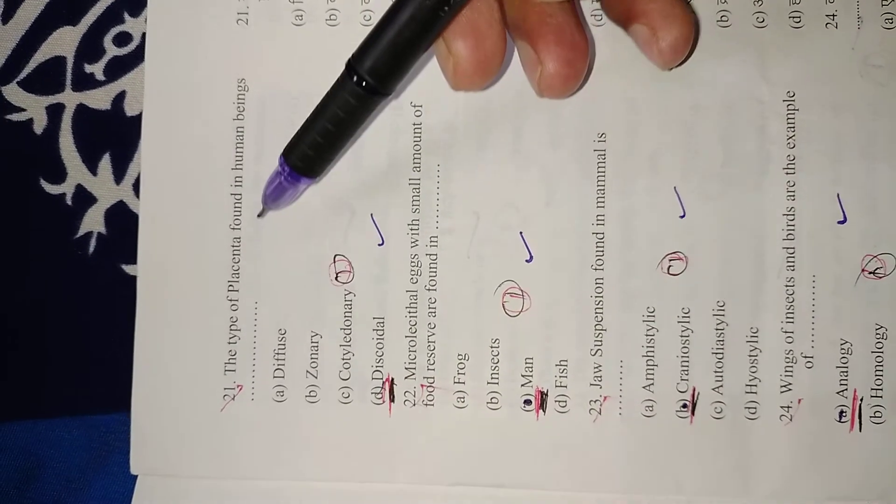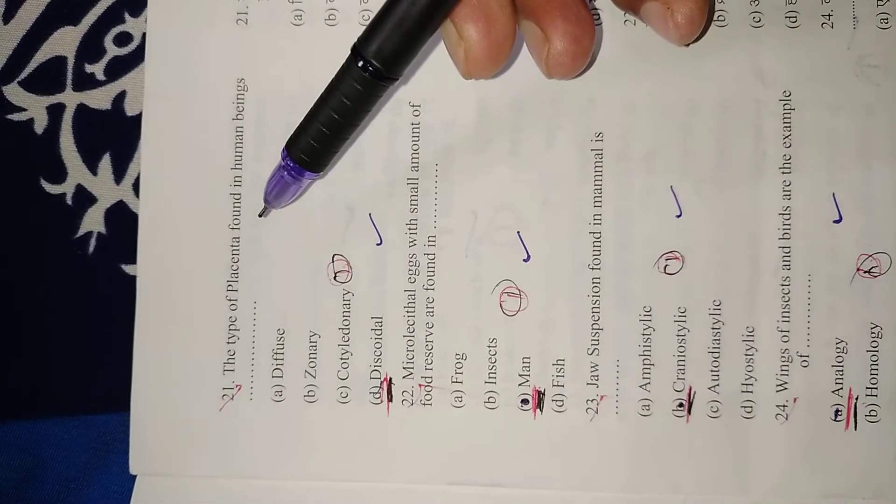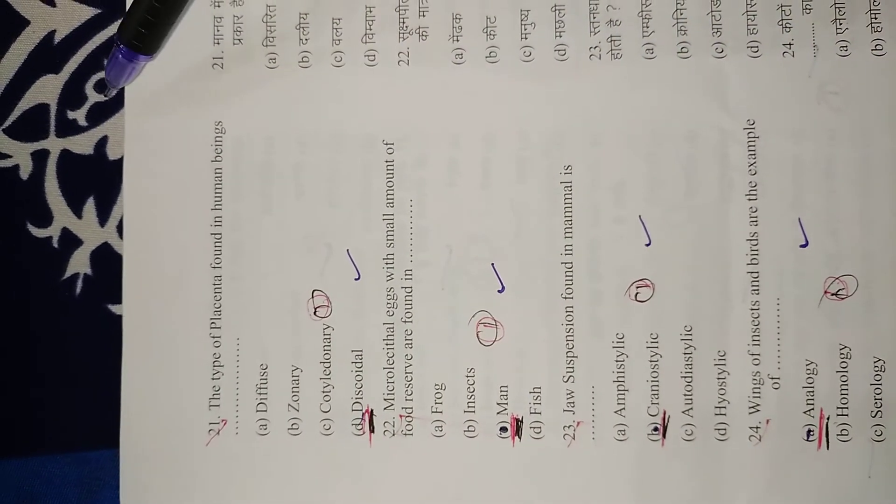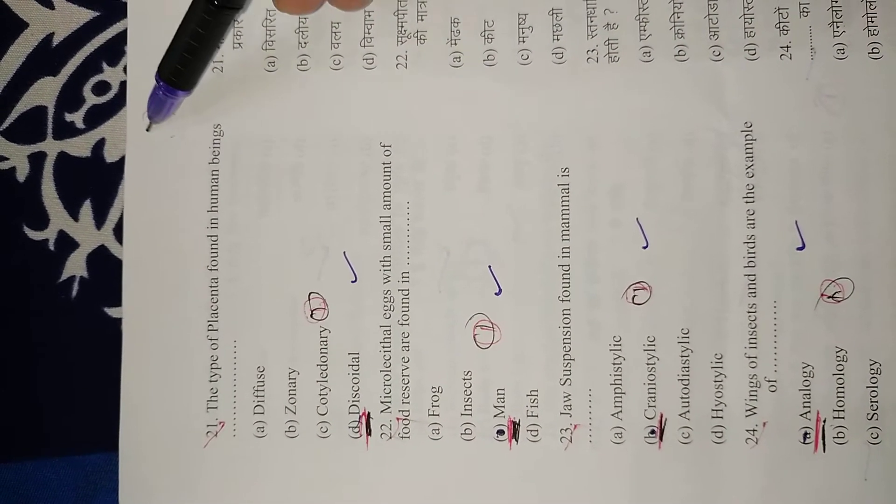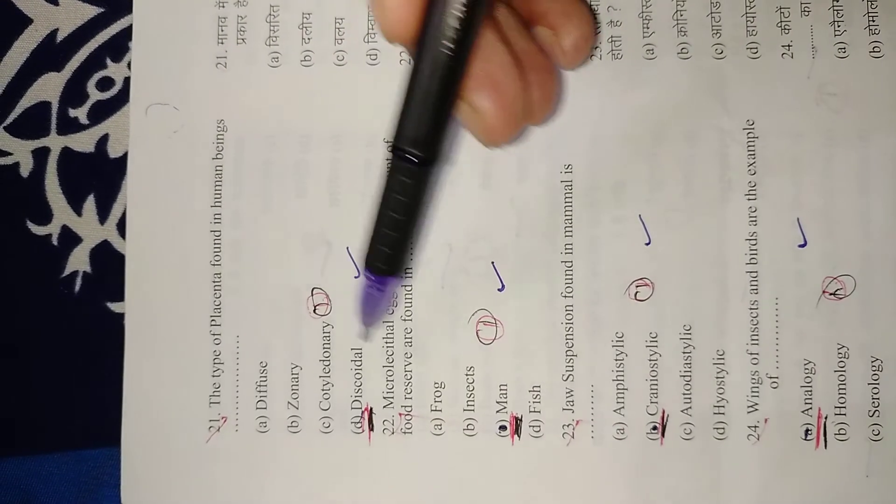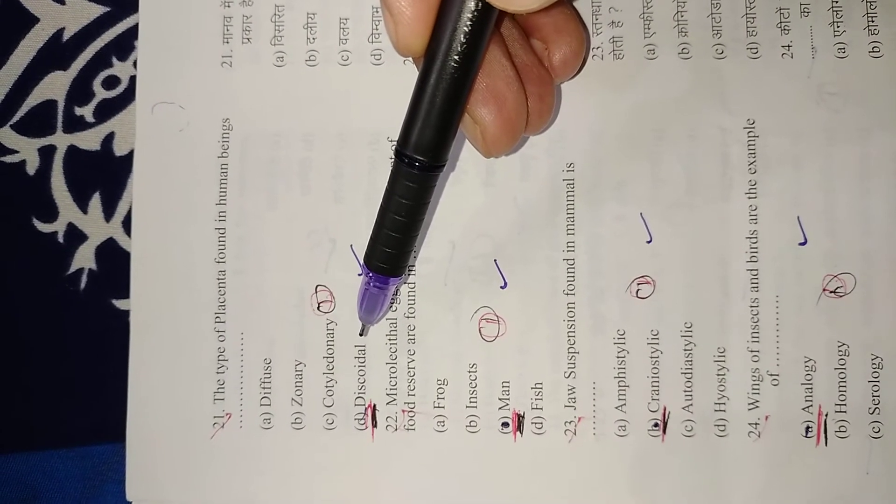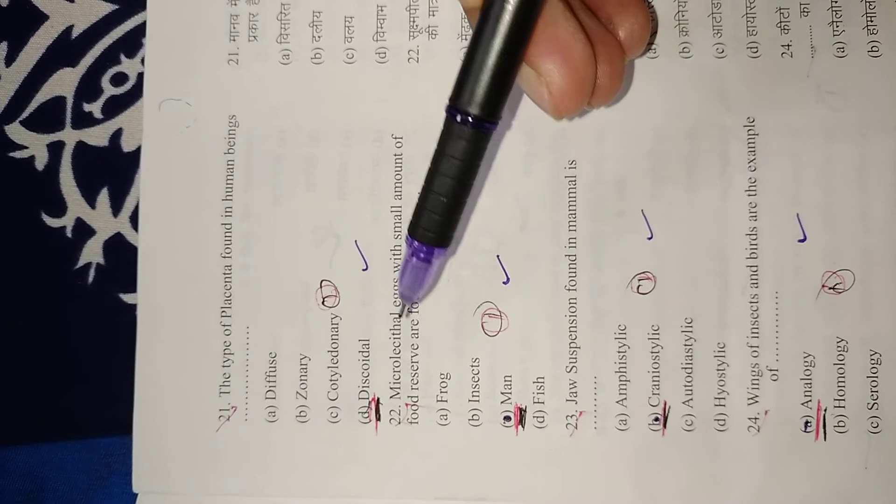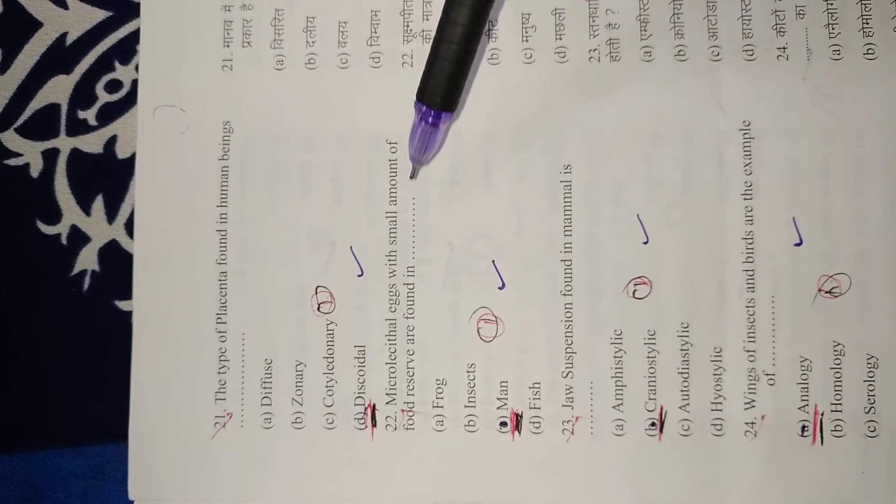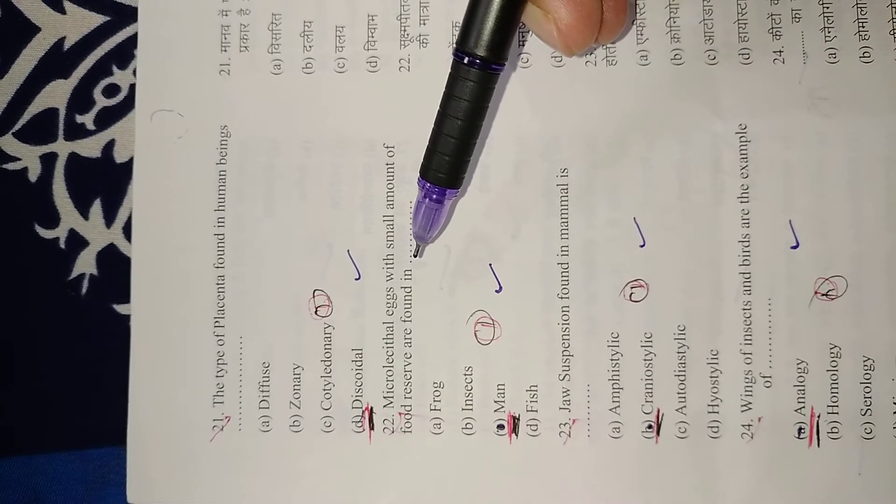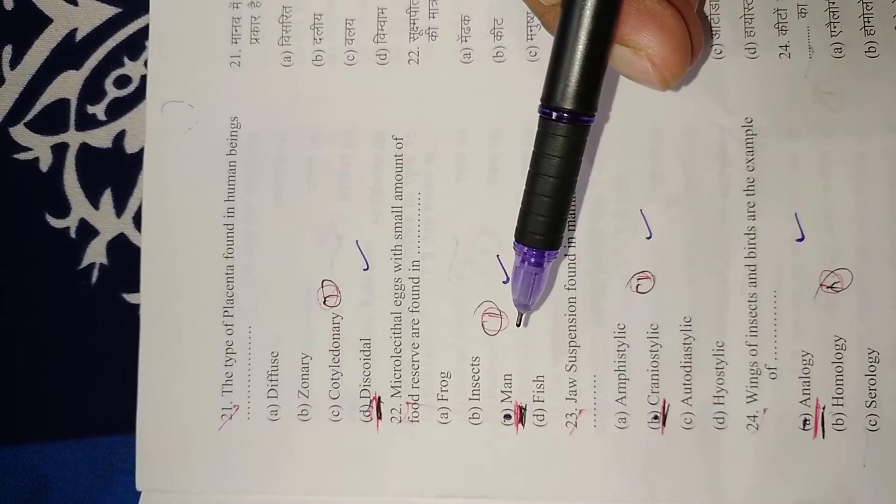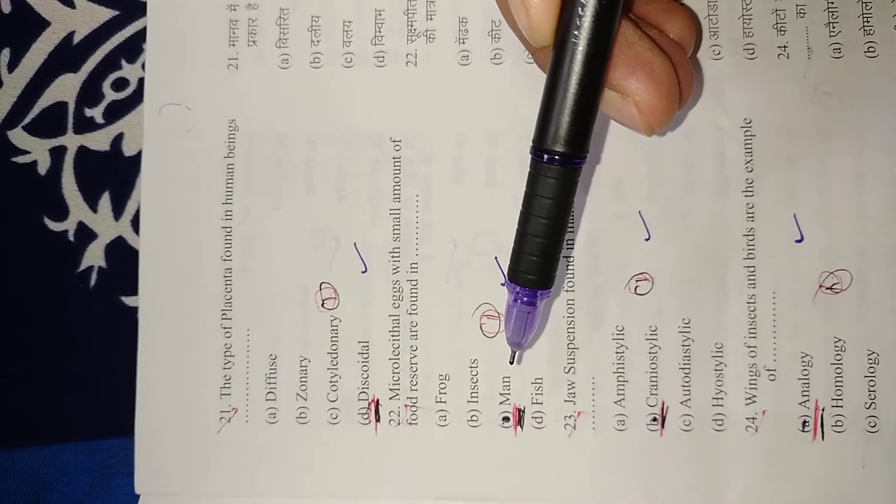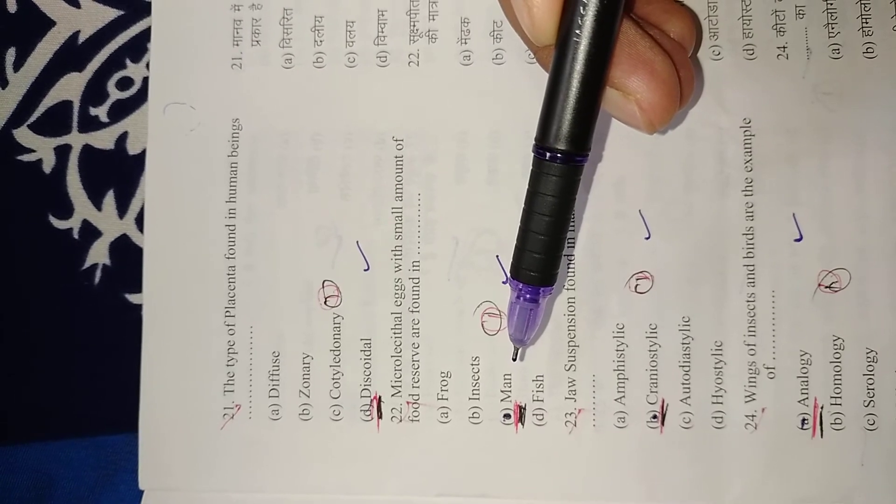Question 21: Type of placenta found in human beings? Human beings have discoidal type of placenta. They are disc-shaped. Right option is D, discoidal. Question 22: Microlecithal eggs with small amount of yolk are found in man. The ova of humans have very little amount of yolk, so we call them microlecithal. Right option is C, man.